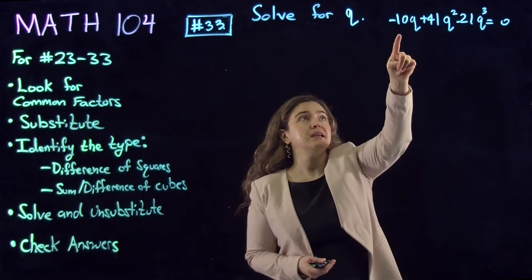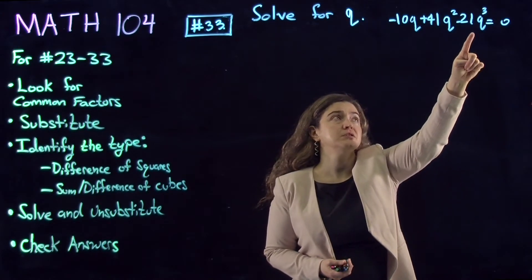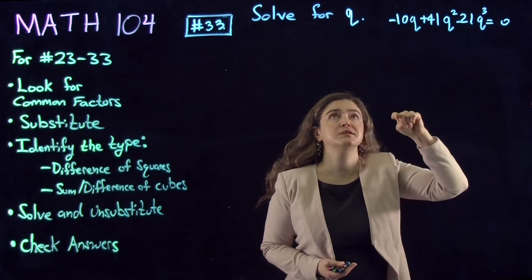This time it's -10q + 41q² - 21q³ = 0, and we're solving for q.